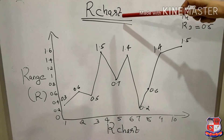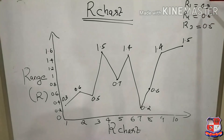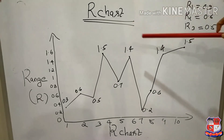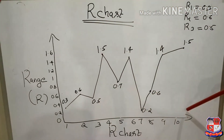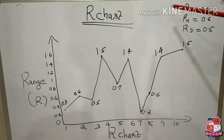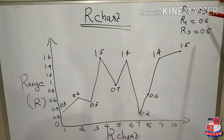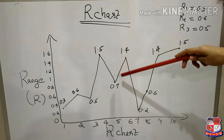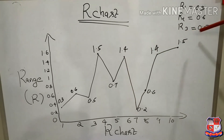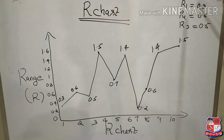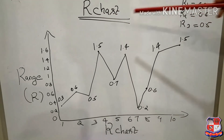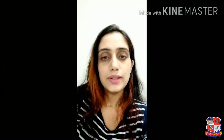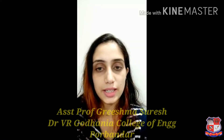For the R chart, we already found R1 through R10. Based on those values we draw the R chart. The scale is chosen accordingly. R1 = 0.3, R2 = 0.6, R3 = 0.5, R4 = 1.5, then 0.7, 0.4, 0.2 and so on. This is the basic R chart. Quality control will be discussed further in the next section. Please watch this video and if you have any doubt, let me know.